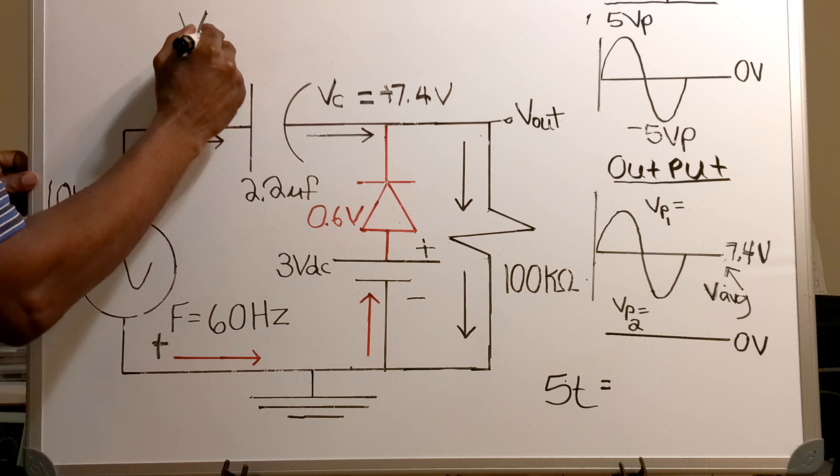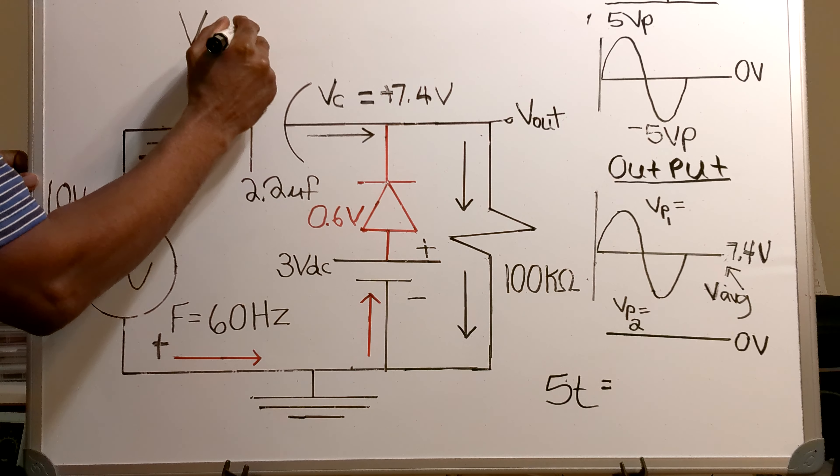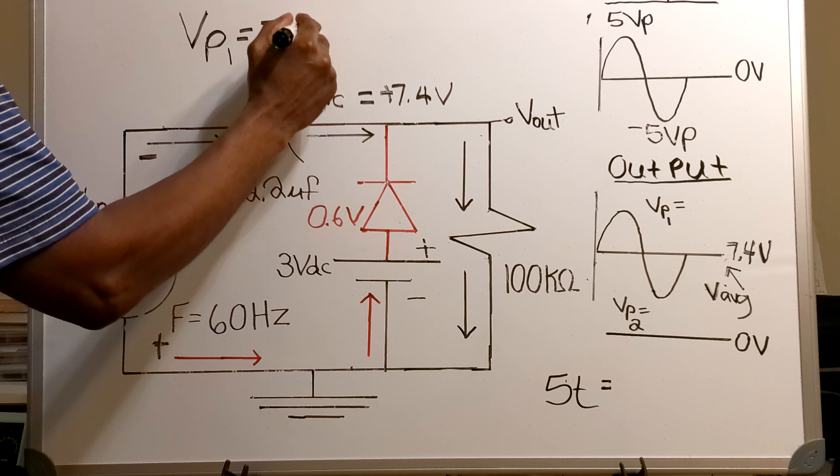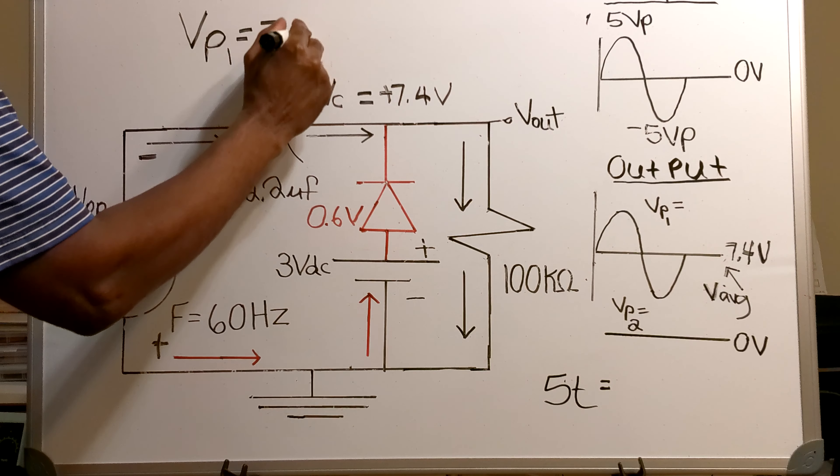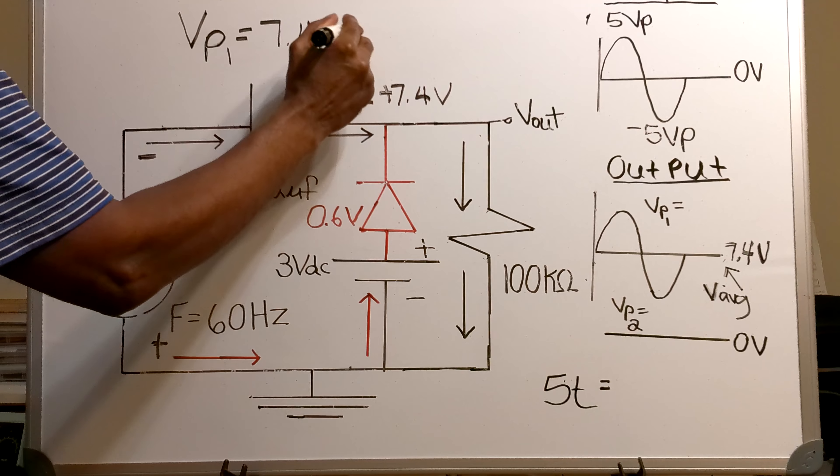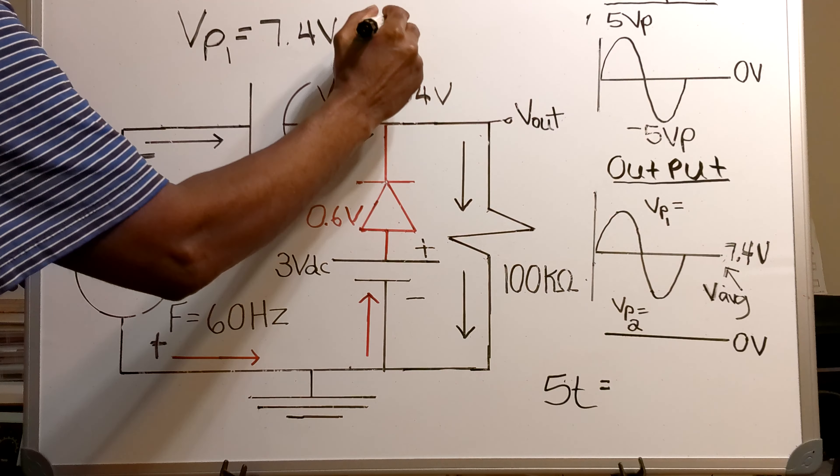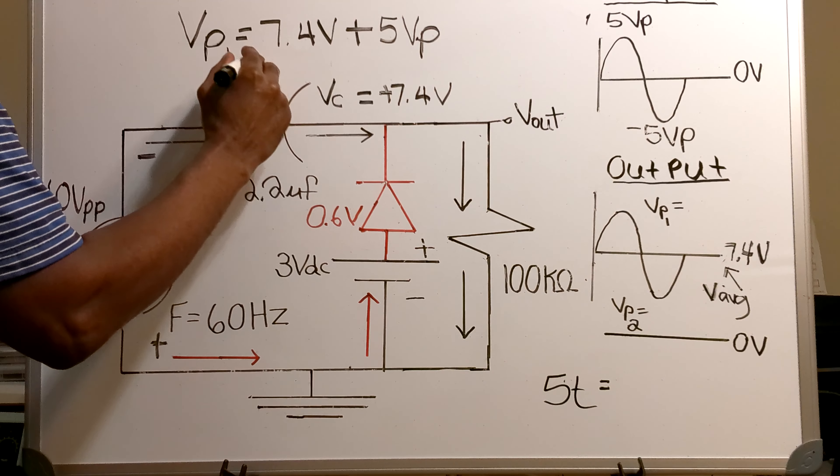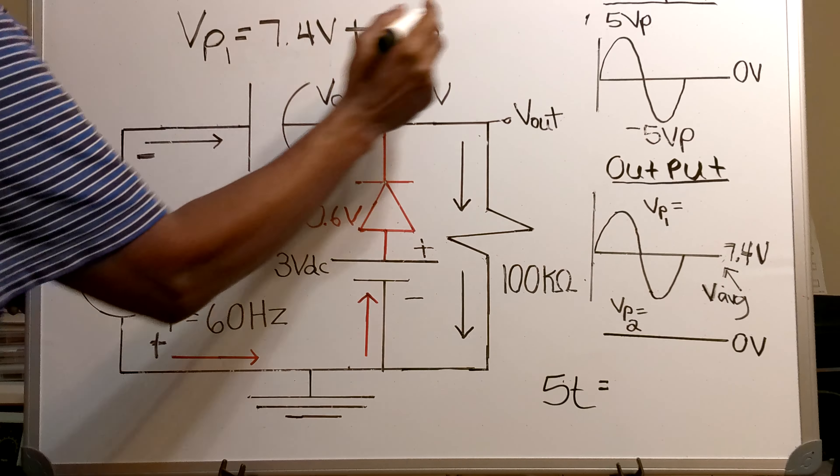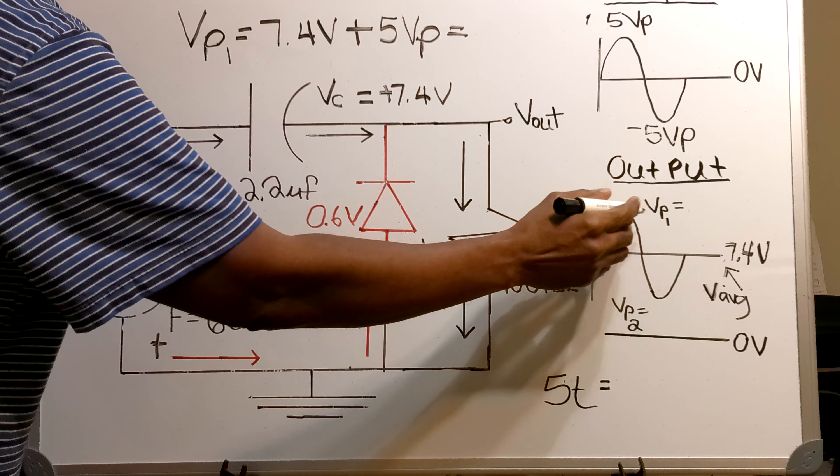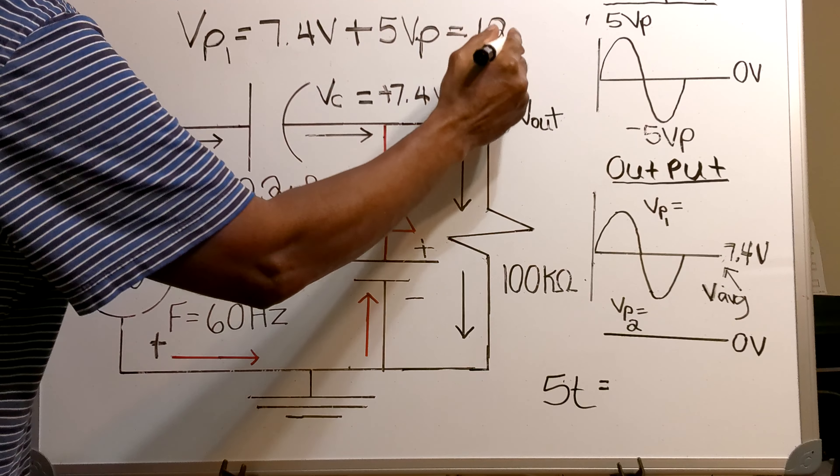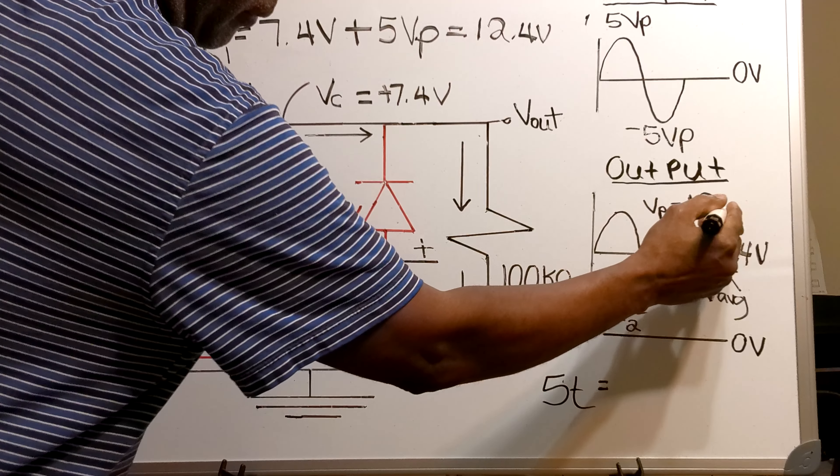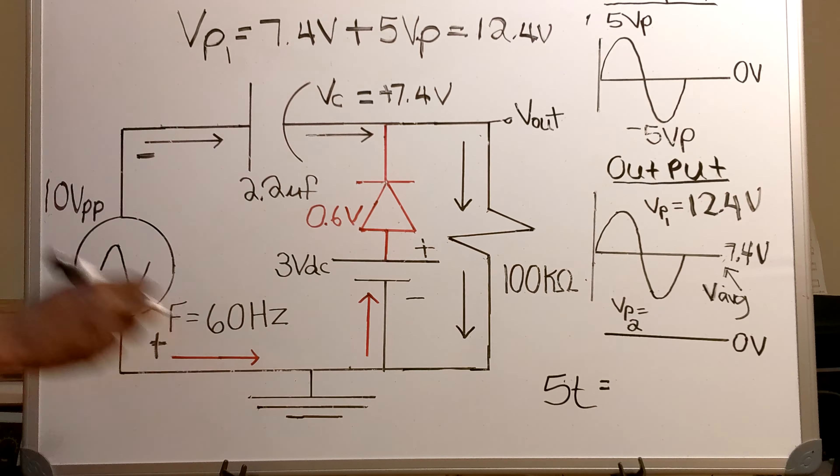Now the next step for me is to find the VP peak 1, that is this peak voltage right here. So I'll go VP1 equals 7.4 volts plus 5 volts peak. That equals a VP1 of 12.4 volts.